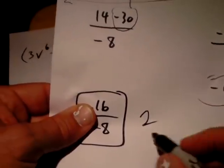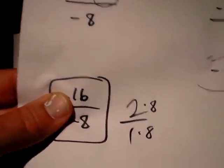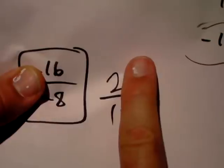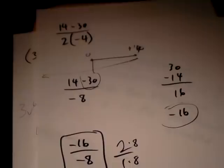Negatives cross out top and bottom and we get 2 over 1 because you can say 2 times 8 and 1 times 8. Does that help? 2 times 8, 1 times 8, and cross those out and you get 2.